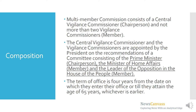The CVC is a multi-member body and consists of one chairperson — the Central Vigilance Commissioner — and two members, that is the Vigilance Commissioners. They are appointed by the President on the recommendation of a committee consisting of the Prime Minister as chairperson, the Minister of Home Affairs, and the Leader of Opposition of the Lok Sabha as members. The term of office is 4 years or 65 years of age, whichever is earlier.